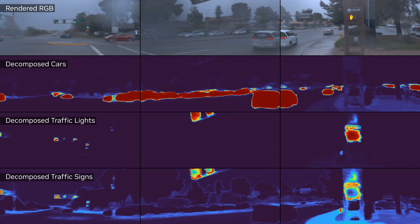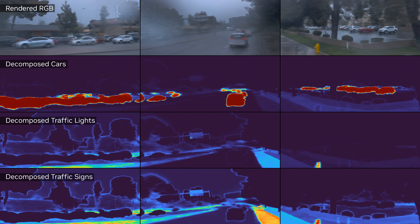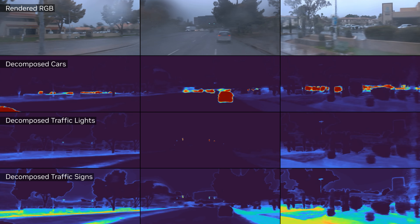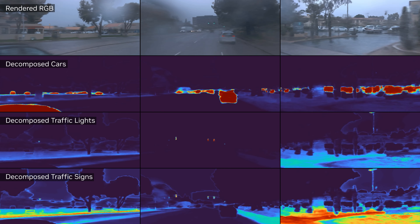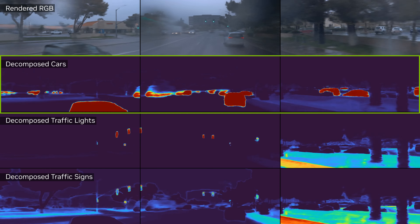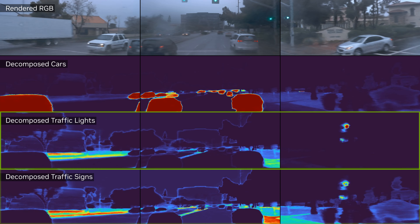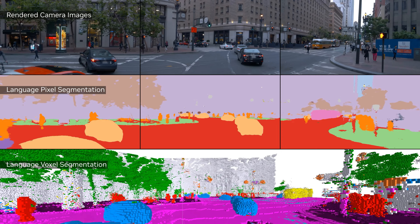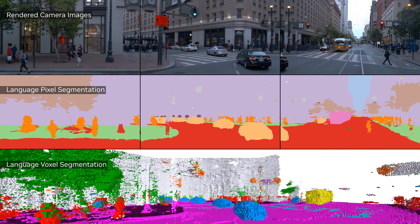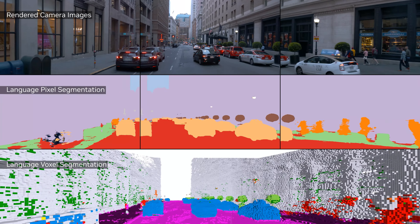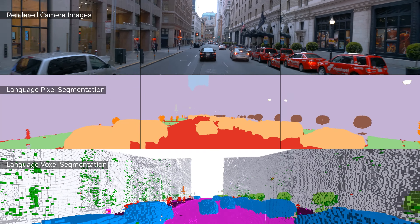Incorporating features from vision-language models enables text-based queries for specific concepts in the scene. In this example, we are asking the model to highlight all pixels corresponding to cars, traffic lights, or traffic signs. Additionally, we can directly segment all objects based on text queries and obtain both 2D image and 3D scene segmentations.